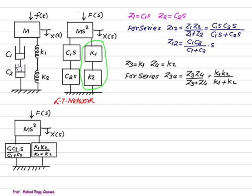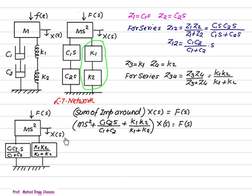Otherwise, we required X1, Y1, Z1 like this one. Now, we have sum of simple impedance. Since we have one displacement only, we will write sum of impedance around X of S is equal to F of S.